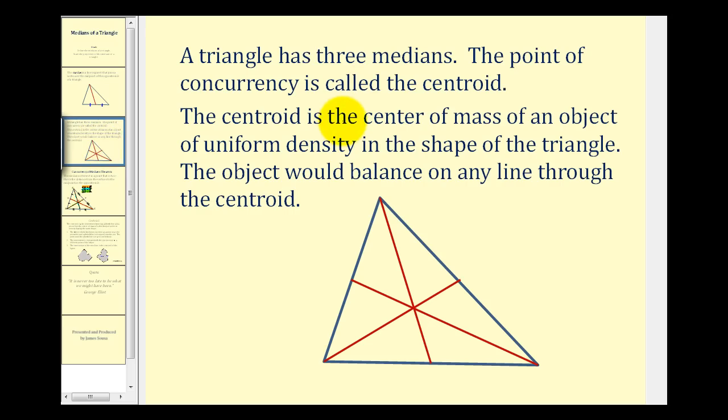Because each triangle has three vertices, every triangle also has three medians. And the point of concurrency of the three medians is called the centroid. So in this diagram, this point here is the centroid. It's the point where all three medians intersect.